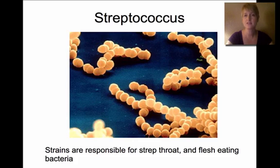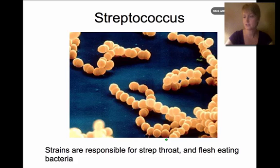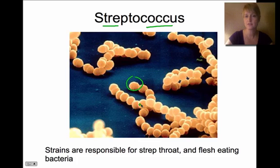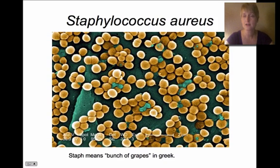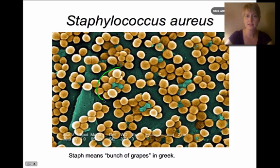Streptococcus is responsible for strep throat and flesh-eating bacteria. You'll notice these have a round shape — that's the cocci — and 'strep' means they're in long chains, which you can see here. Staphylococcus aureus is also a cocci, but you'll notice it's in clusters rather than long chains, which is why we put 'staph' in front of that word.